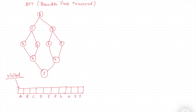I have taken a graph and I'm going to explain how the BFT algorithm works. I have taken one array that is the visited array, and the data structure used in breadth first traversal is a queue.